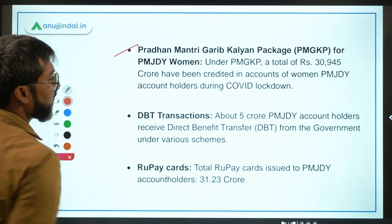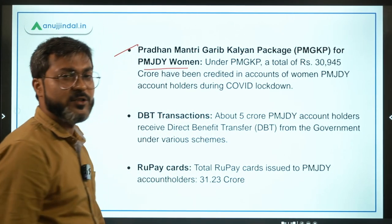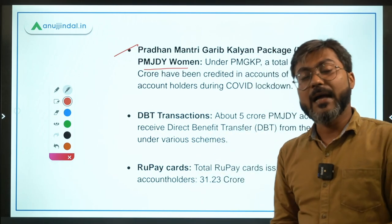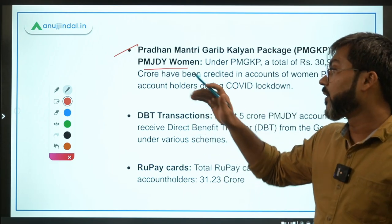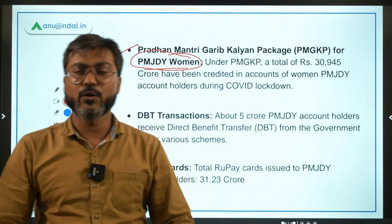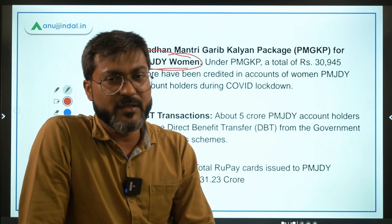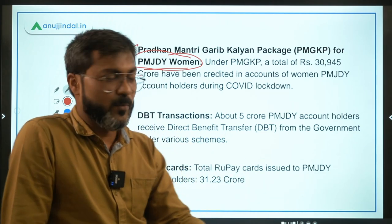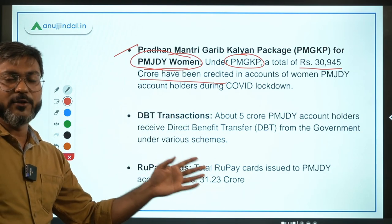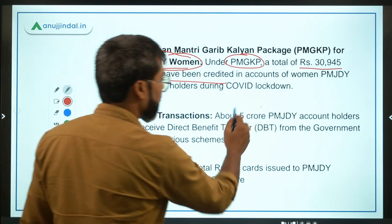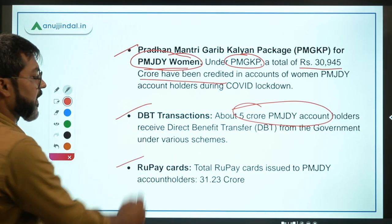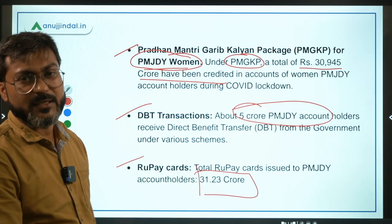Under the Pradhan Mantri Garib Kalyan Package, women beneficiaries of Pradhan Mantri Jan Dhan Yojana were given financial support. A total of Rs. 30,945 crore has been credited into the accounts of women PM Jan Dhan Yojana account holders. Regarding DBT, about 5 crore PM JDY account holders receive direct benefit transfers under various government schemes. Also, 31.23 crore RuPay cards have been issued so far.